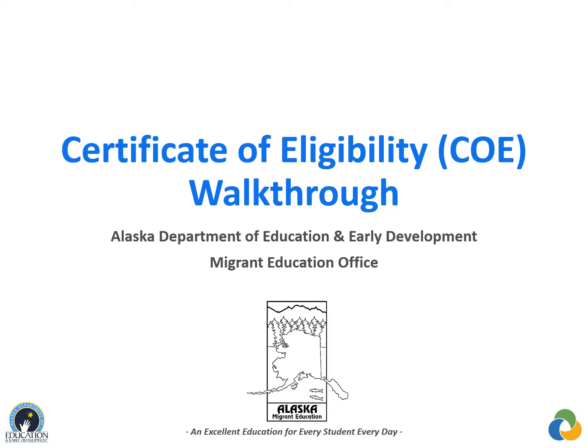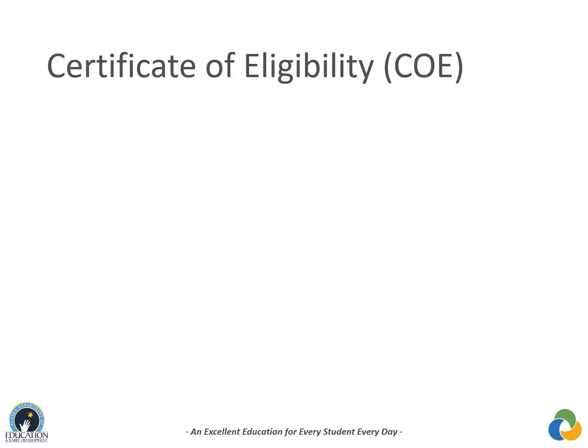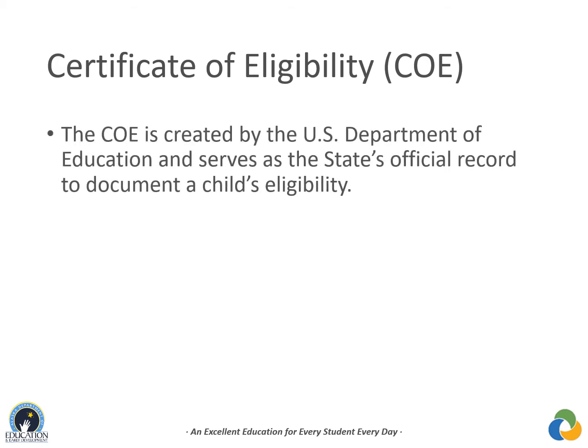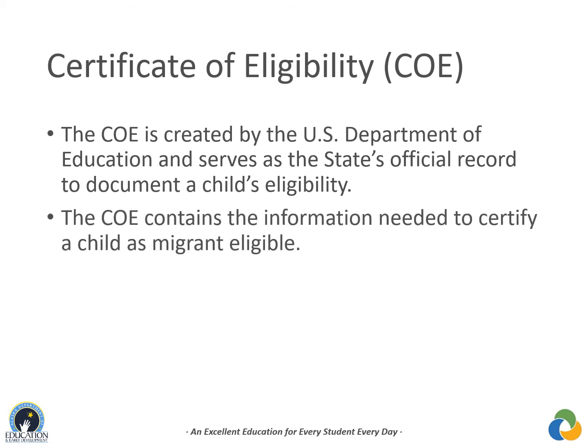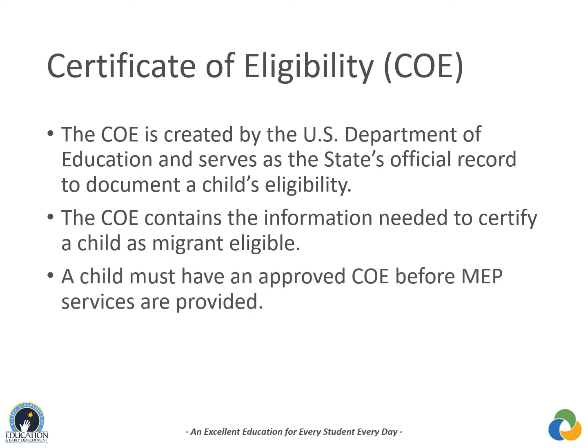Welcome to the Alaska Migrant Education Program video training series. This video takes a closer look at the different sections of the Certificate of Eligibility, or COE, which is the form used to document a child's eligibility in the program. Under the Migrant Education Program (MEP), every migratory child's eligibility must be documented on the National COE, created by the U.S. Department of Education. A child must have an SEA-approved COE before MEP services may be provided.